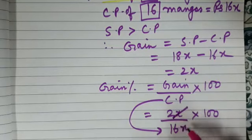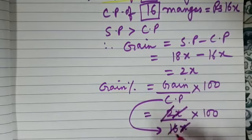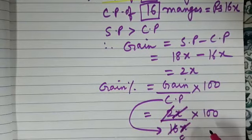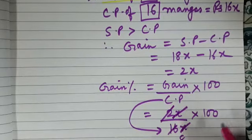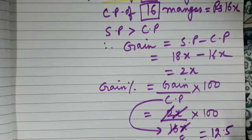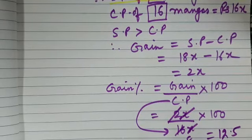Now we can simplify this. x and x gets cancelled, so we get 100 upon 8, that is 12.5. So gain percent is 12.5%. I hope it is clear to you.